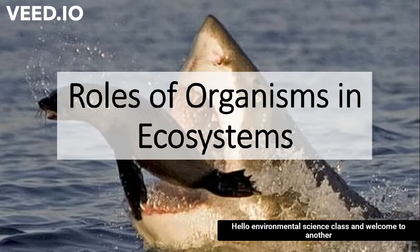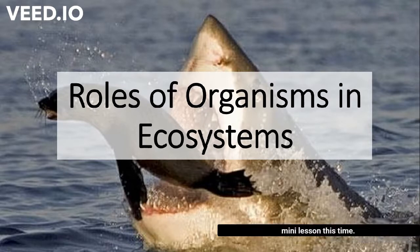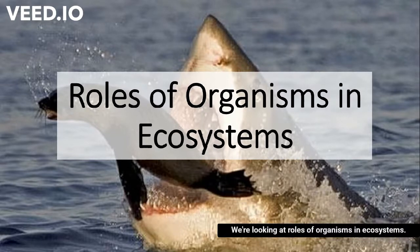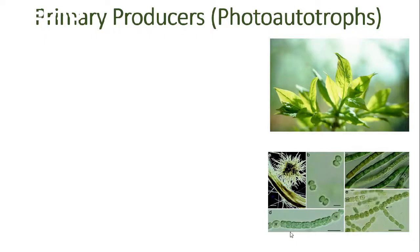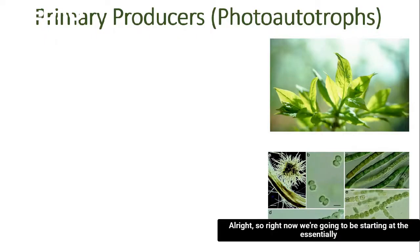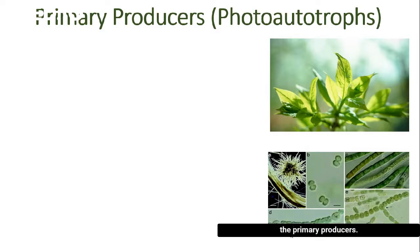Hello, environmental science class, and welcome to another mini lesson. This time we're going to be looking at roles of organisms in ecosystems. We're going to start at essentially the base of the food web with what we call the primary producers.